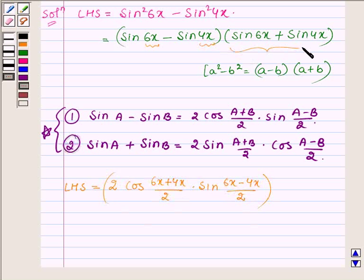Now opening the second bracket which is sin6x + sin4x, it can be written as 2sin((6x+4x)/2)·cos((6x-4x)/2).